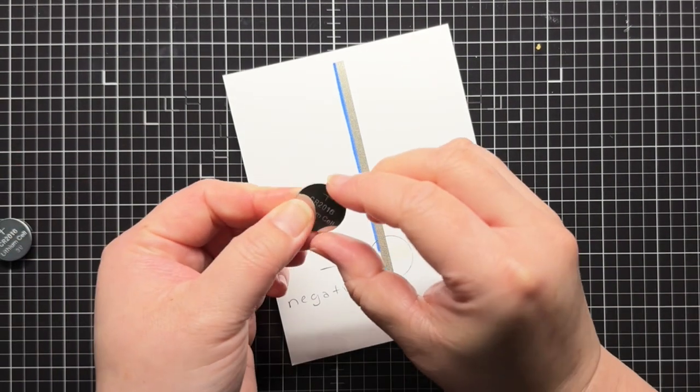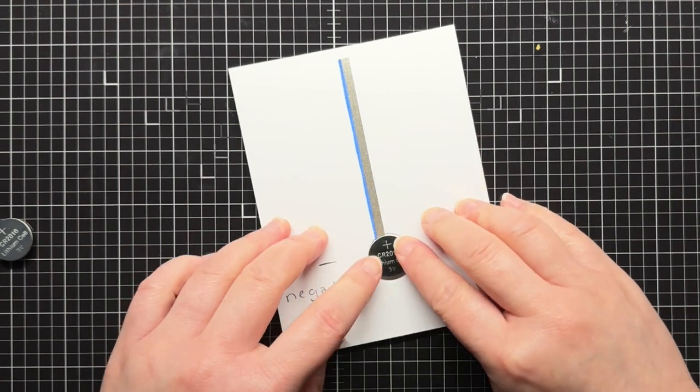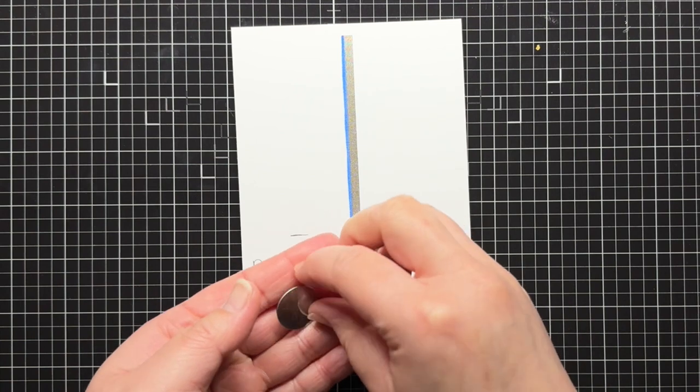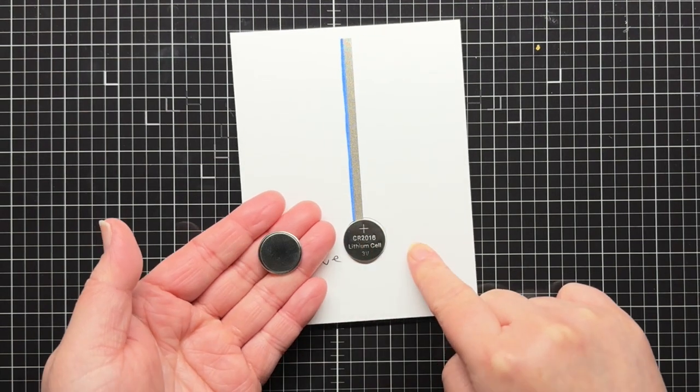Then I place my 3V coin cell battery positive side up in the circle. The battery will have a plus sign on the positive side. The bottom negative side of the battery has curved edges and no lettering.